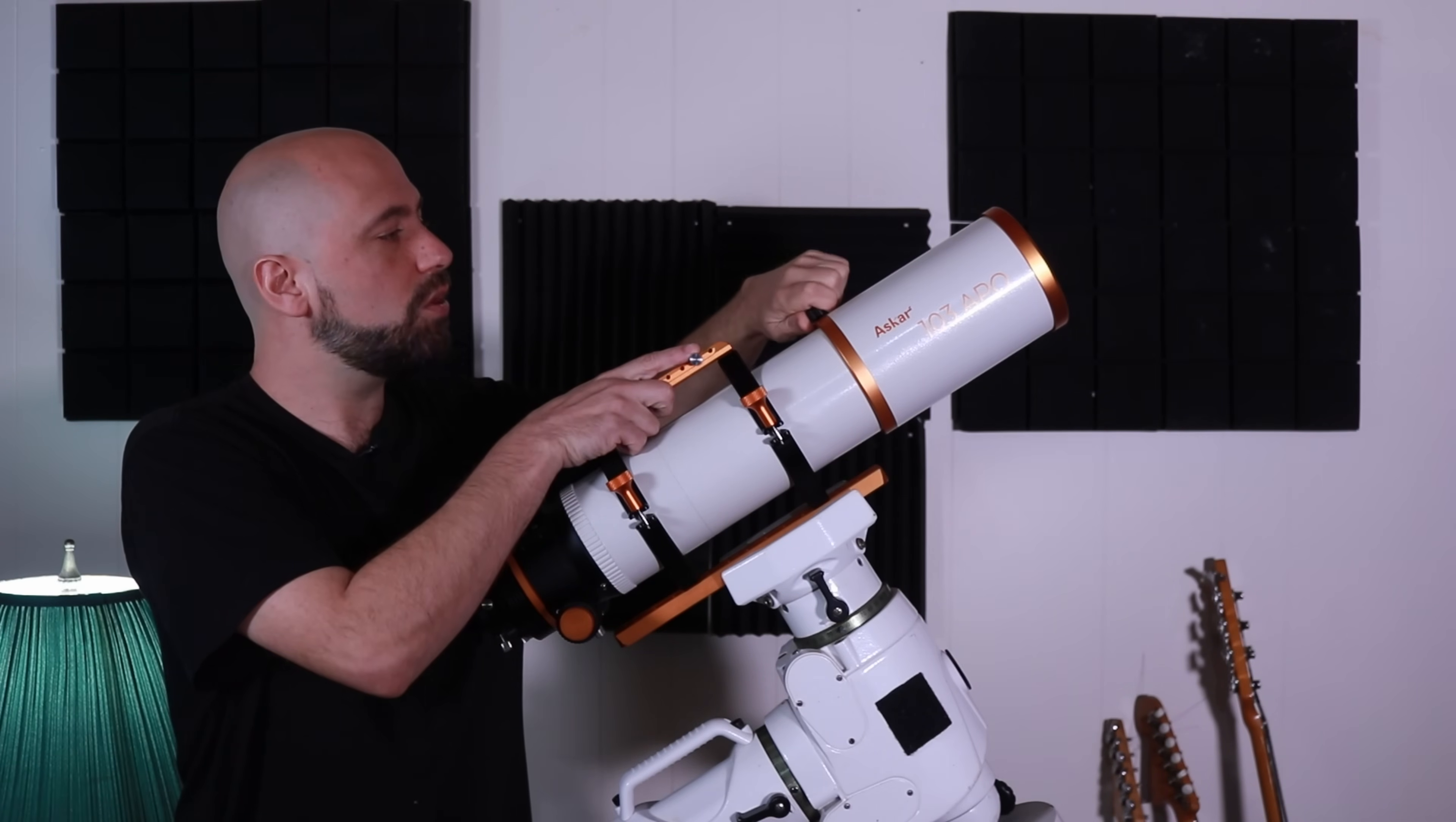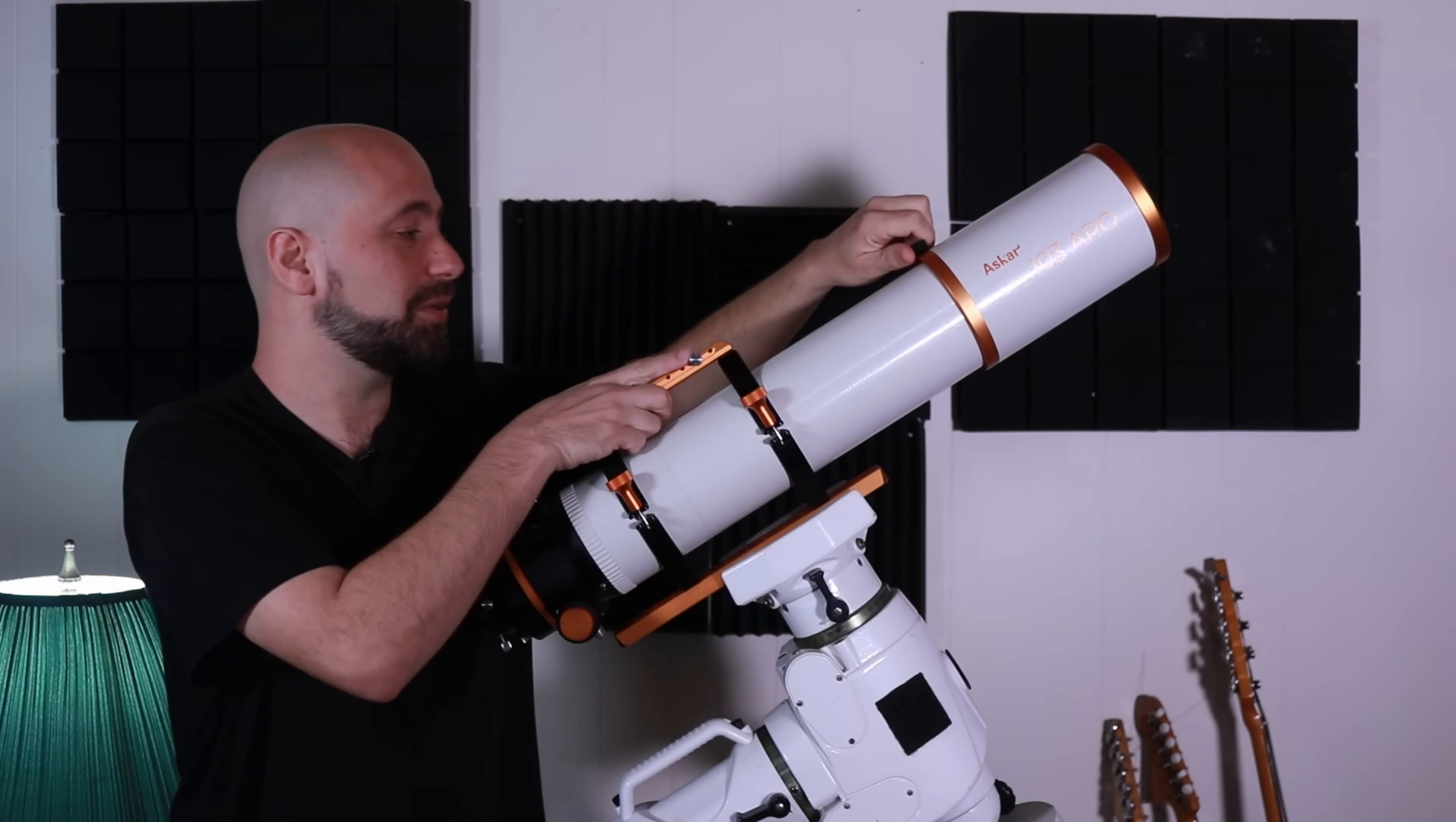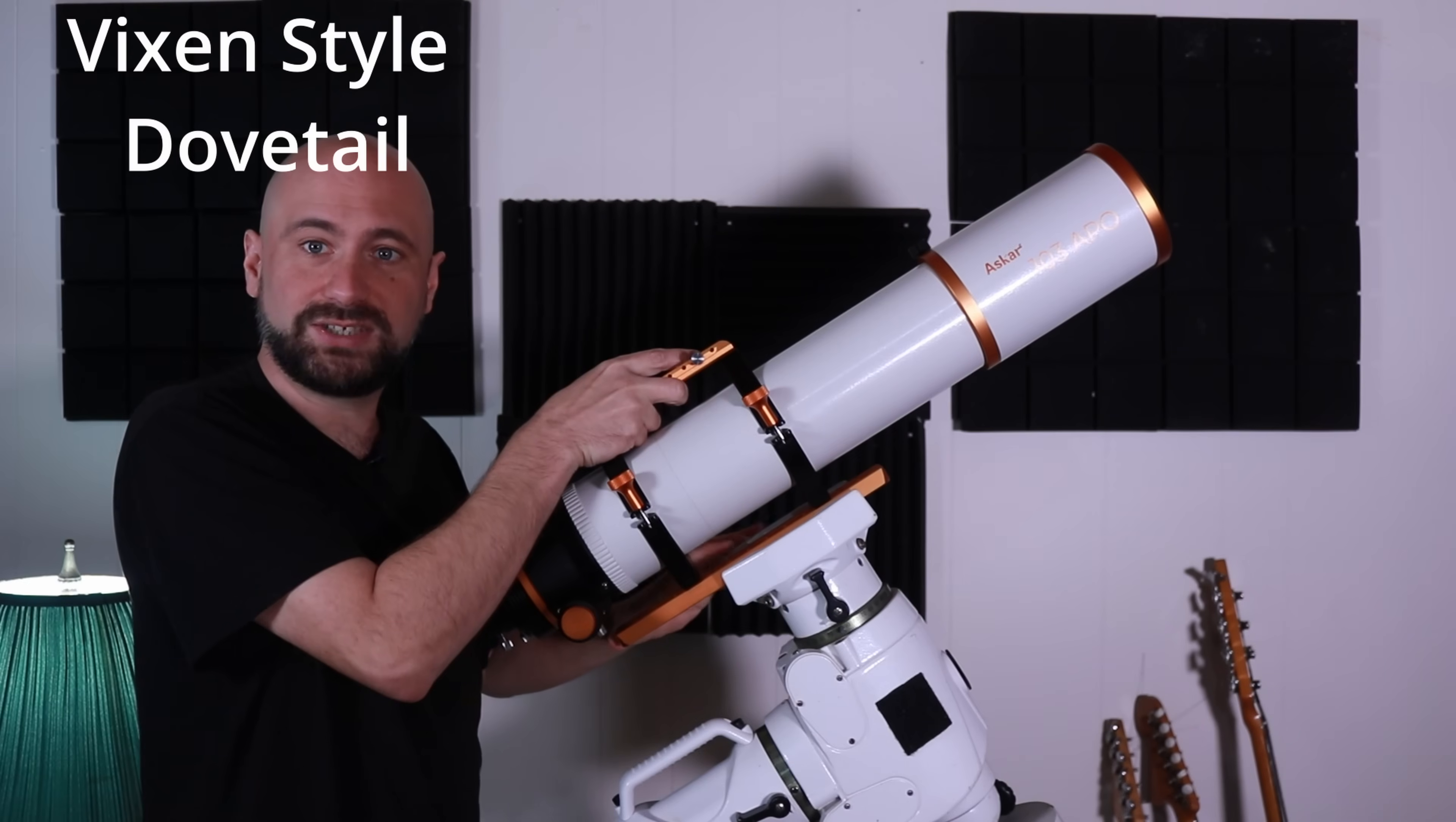It has quite a long retractable dew shield with a locking knob at the top, so when you get it out, you can lock it down, and that significantly increases the length of this telescope. It's got a nice sturdy set of rings with some ring locks right here, a long dovetail, making it easy to get your declination balance.